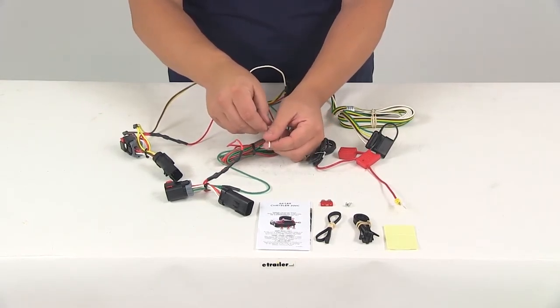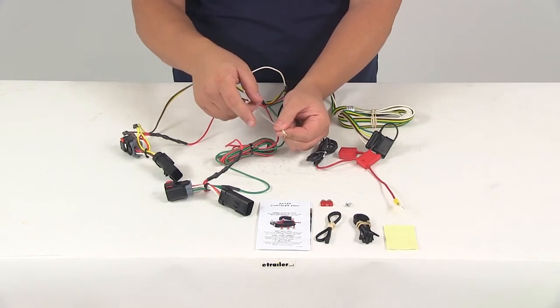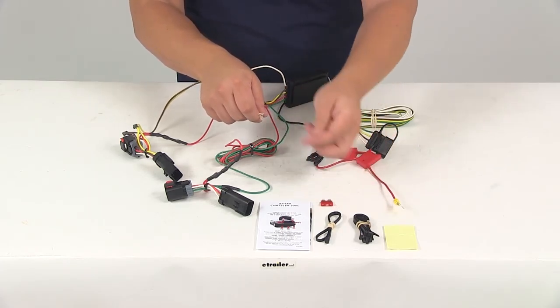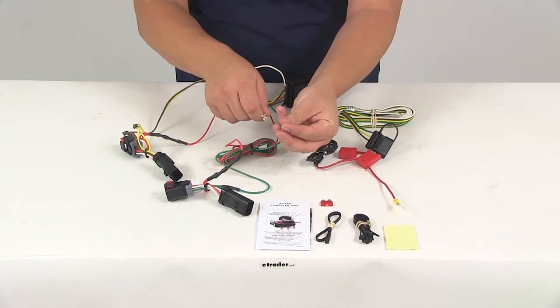You want to ground to a nice clean metal surface. You can do that with the white wire. It has a ring terminal attached to it and you can make your ground connection using the included self-tapping screw.